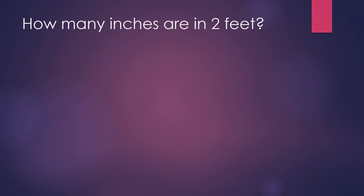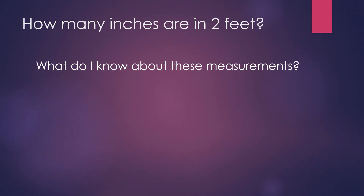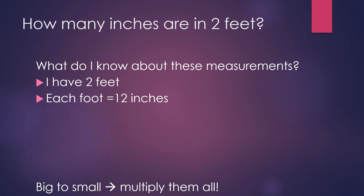Our first example: how many inches are in two feet? First I ask myself what do I know about my measurements. The question says inches and feet. I know I have two feet, and I know that each foot equals 12 inches. Next, I figure out if I'm multiplying or dividing. Since I'm going from a bigger unit — the foot — to a smaller unit — the inch — I know I have to multiply, because big to small we multiply them all. So I do 12 times 2, and I find that 2 feet equals 24 inches.